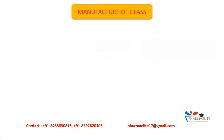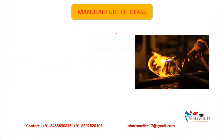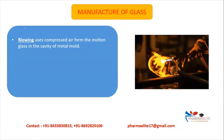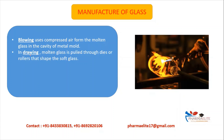Now we are going to study the manufacturing of glass. The first step is blowing — compressed air is blown inside molten glass present inside the cavity of a metal mold. The second step is drawing — the molten glass is spooled through dies or rollers, giving shape to the soft glass.